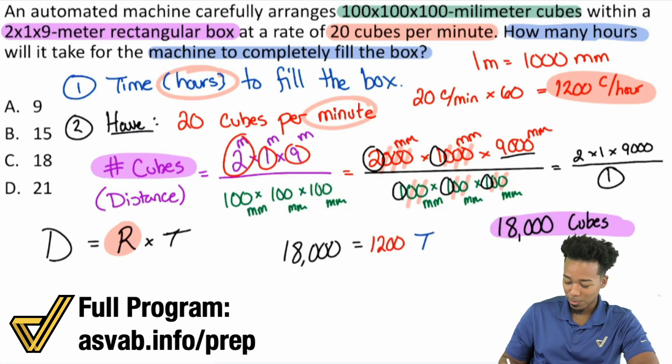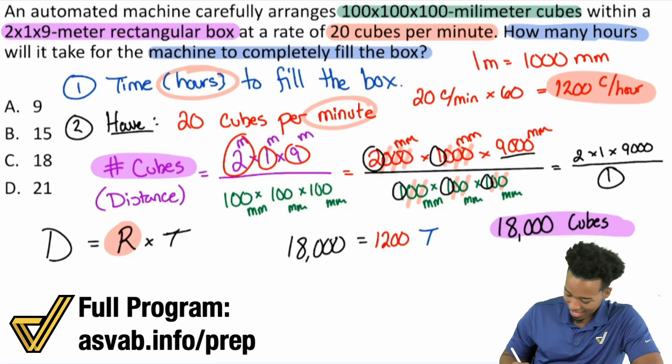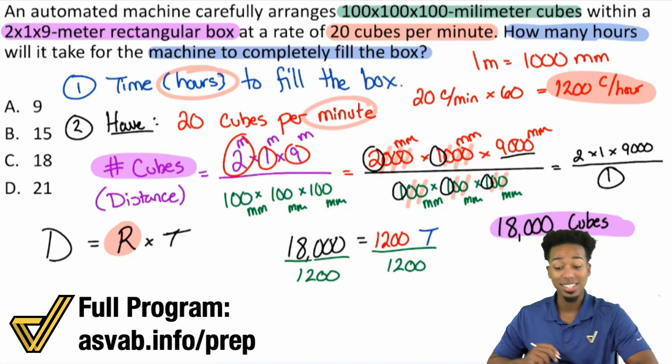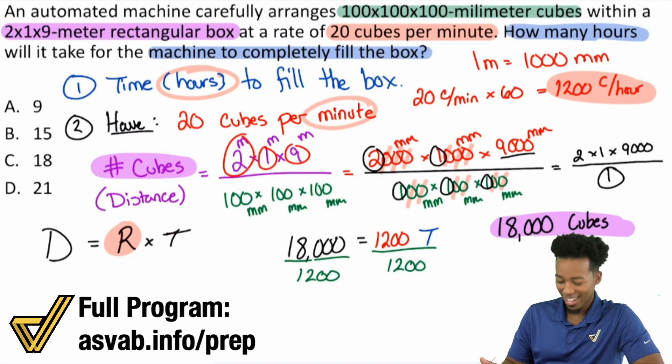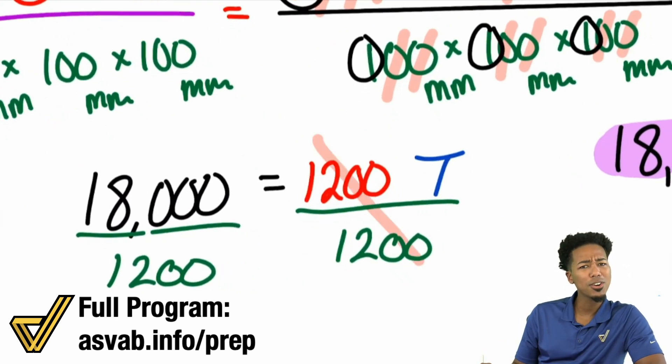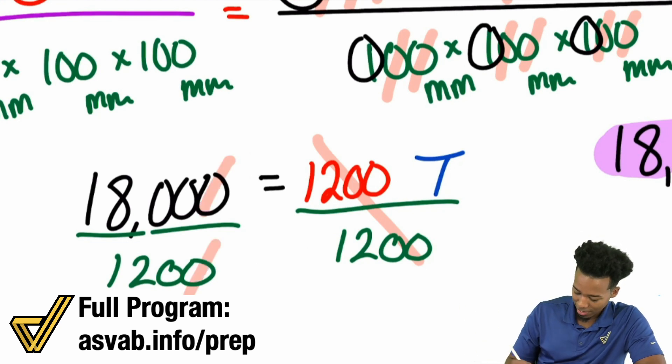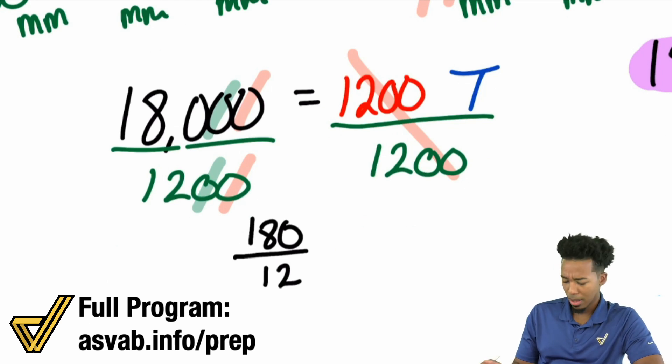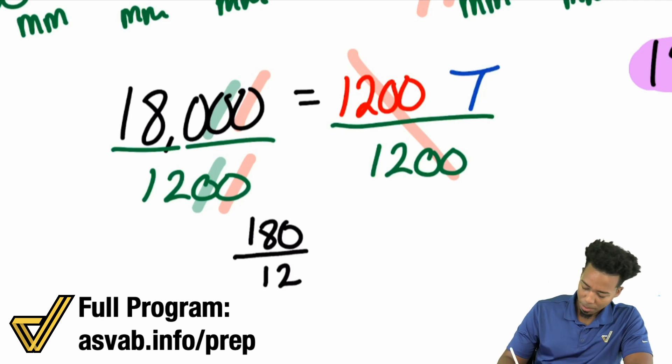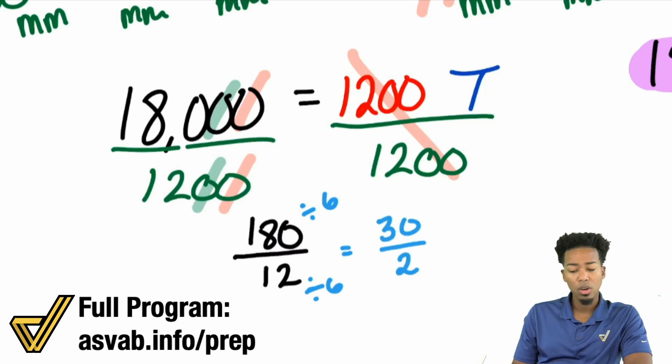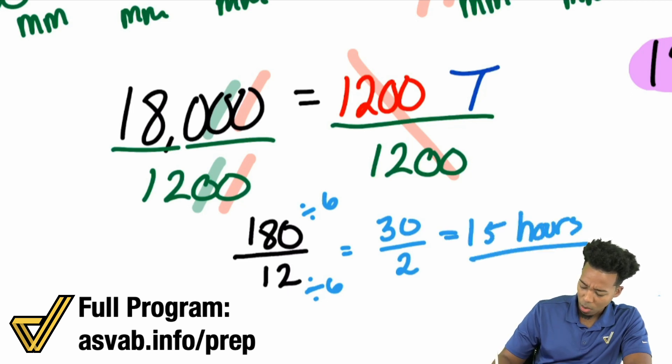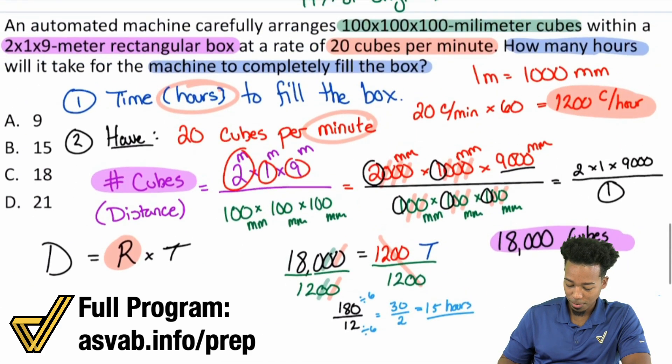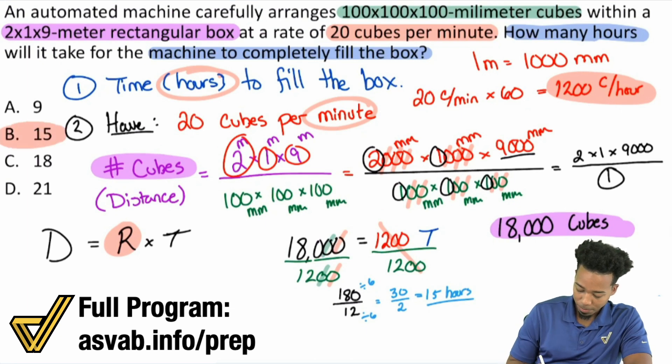Now we're ready to work. We've set up our distance rate time formula. The last thing we'll do is divide both sides by 1,200. We can be pretty proud because this looked like a crazy problem, but we were able to handle it with grace. That's going to cancel on the right side. When we're dividing and you've got a bunch of zeros, boom, boom, goodbye. We're essentially looking at 180 over 12. I can divide the top and bottom by 6. 180 divided by 6 is 30, 12 divided by 6 is 2. What's 30 divided by 2? 15. 15 hours is the amount of time it'll take to completely fill the box.